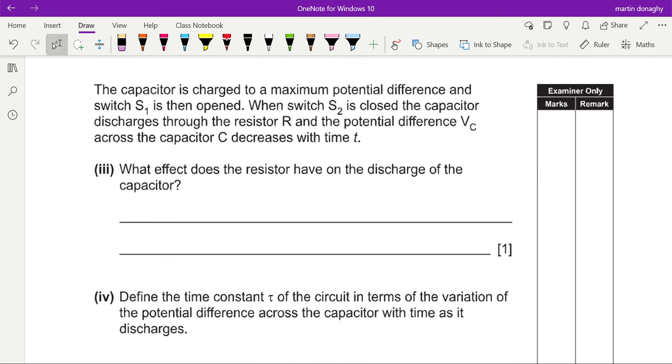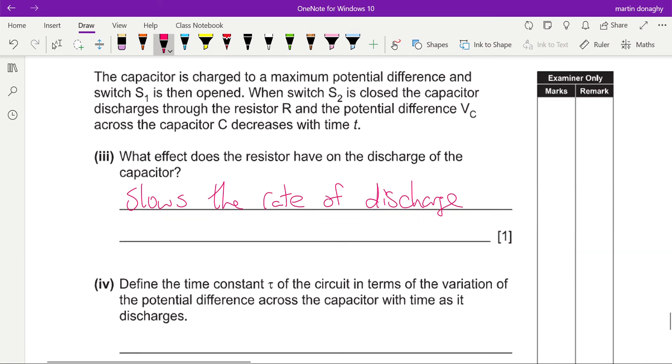The capacitor is charged to maximum potential difference, switch S1 is open, switch S2 is then closed and it discharges through the resistor R, and the potential difference across the capacitor decreases with time. What effect does the resistor have on the discharging capacitor? It opposes the flow of current, so it slows the rate of discharge, so increases the amount of time it takes for the capacitor to discharge.